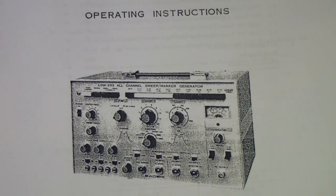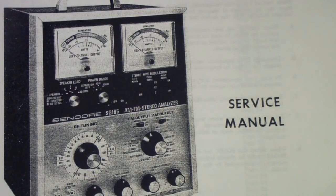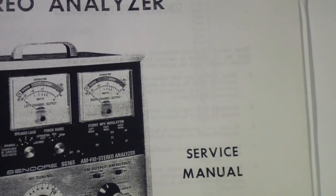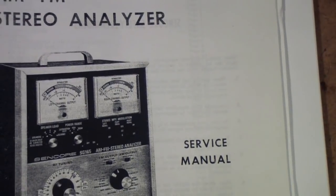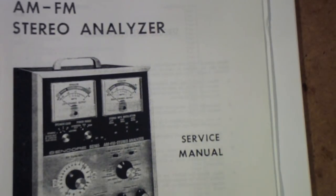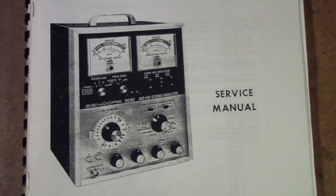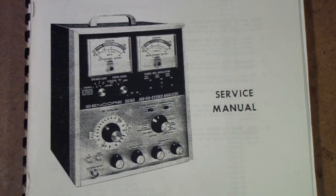Another good one that I used was the Sencore SG165. Now this one is only useful for AM and FM, and the sweep only really works on FM. They call it a stereo analyzer because it has the power meters and other things, but among other things it has a sweep generator.